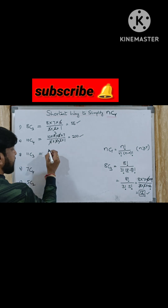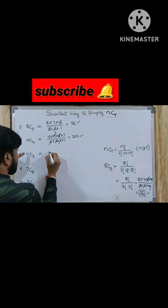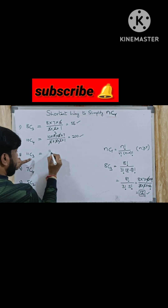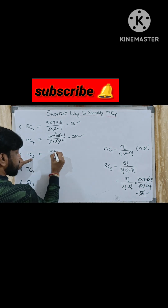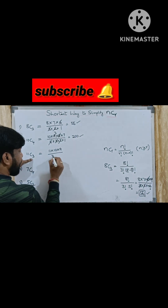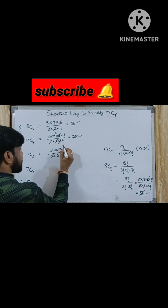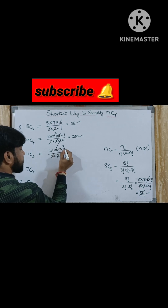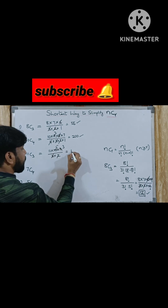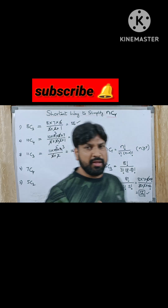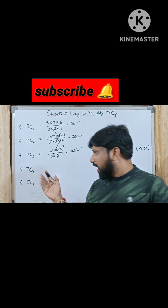Let's go to one more example: 11C3. 11C3 can be written as starting with 11 and writing 3 digits in decreasing order — 11 into 10 into 9 — divided by 3 into 2 into 1. So 3 cancels with 9, giving 3; 2 cancels with 10 giving 5; then 5 into 11 is 55, and your answer is 165.